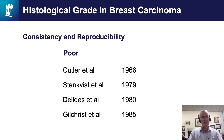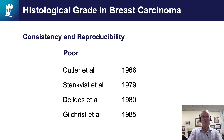Some people have criticised grading over the years as poorly reproducible between different pathologists. It is a subjective skill that pathologists have to learn, and part of the reason for poor consistency in the past is that the criteria in various classification systems were somewhat unclear. So what we've done — many years ago now, though still used internationally — is to try to put some objective criteria to grading.